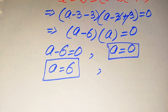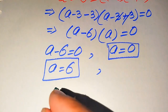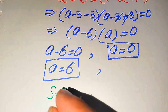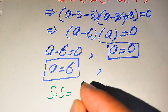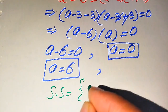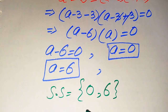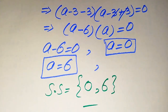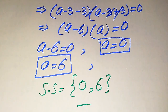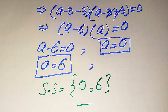We already verified in Method 1 that both roots satisfy the given equation. So from Method 2 as well, the solution set is {0, 6}. This is our final answer. Thank you so much for watching this video — please subscribe to my channel for more exciting videos.